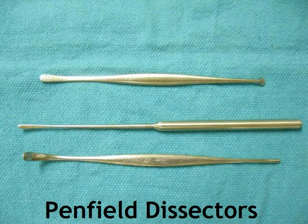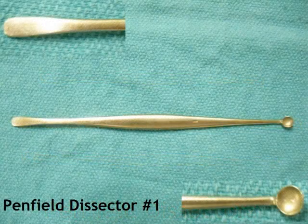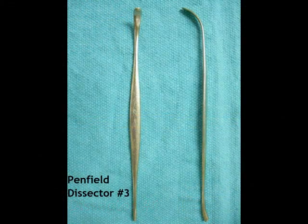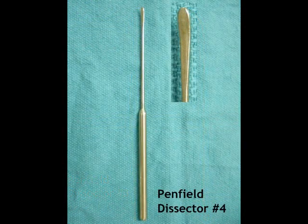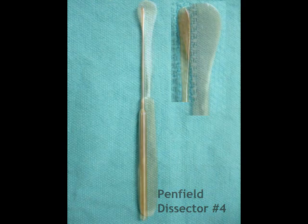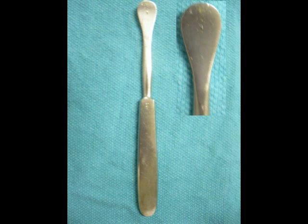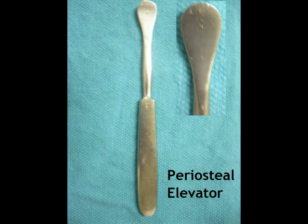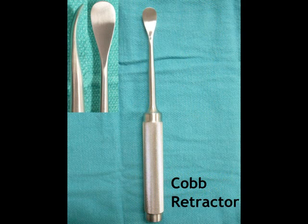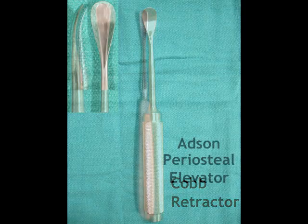The Penfield retractors come in different sizes — there is a number one, a number three, and a number four. And guess what this is? Yes, this is a periosteal elevator. There is another variation called the cub periosteal elevator. The surgeon would usually indicate which one is preferred. There is also this periosteal elevator called the Adson periosteal elevator.